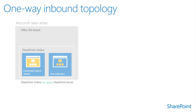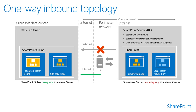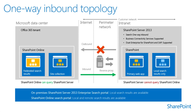A one-way inbound hybrid topology enables SharePoint Online to connect to SharePoint Server 2013 through a reverse proxy device. For example, users of a SharePoint Online search portal can see both local and remote search results, but only local results are available in the SharePoint Server 2013 search portal. A one-way inbound topology can be configured to let your users access on-premises SharePoint search results from the internet, as long as they have a connection to the intranet through a virtual private network or direct access.